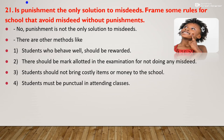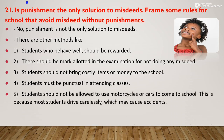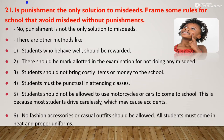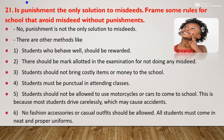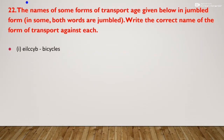Students should not be allowed to use motorcycles or cars to come to school because most students drive carelessly, which may cause accidents. Children can come to school with their parents riding a motorcycle, but they should not ride it themselves. No fashion accessories or casual outfits should be allowed — all students should wear proper uniform.